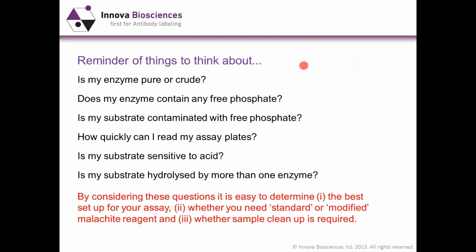A final reminder of things to think about if you're going to use malachite reagents: Is my enzyme pure or crude? Does my enzyme contain any free phosphate? Is the substrate contaminated with free phosphate? How quickly are you going to read your assay plates? Is your substrate sensitive to acid — ATP and GTP are particularly sensitive. And is your substrate hydrolyzed by more than one enzyme, which is important if you have a crude sample? If you think about these things, it's fairly easy to get the best setup for your assay and determine whether any sample cleanup is required.